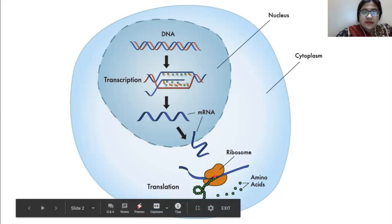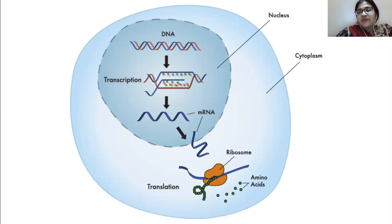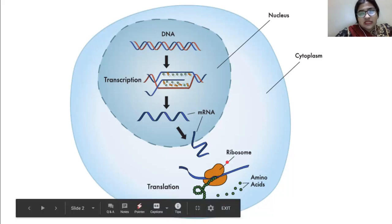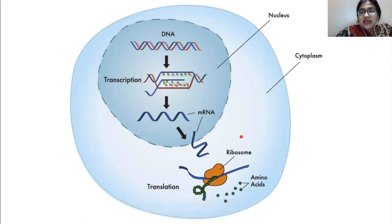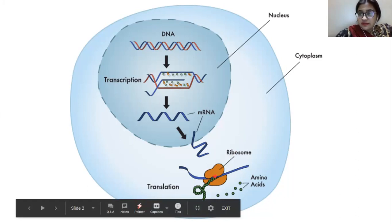We know that there are two locations for ribosomes: some ribosomes are suspended freely within the cell, and the other type is attached to the endoplasmic reticulum in normal cells. In the case of bacteria, ribosomes will be freely suspended. The mRNA will slide through the ribosome in between the two subunits.